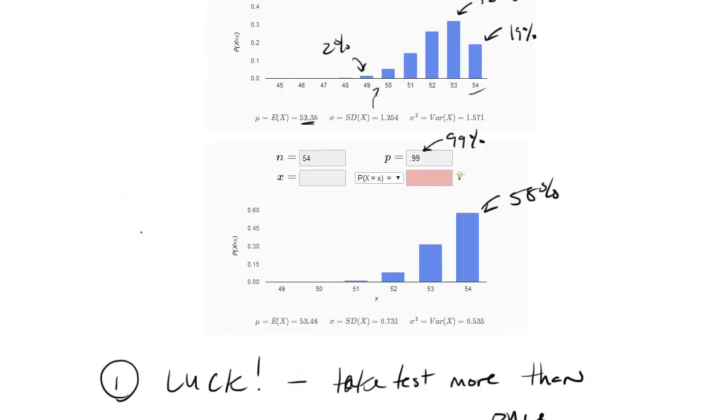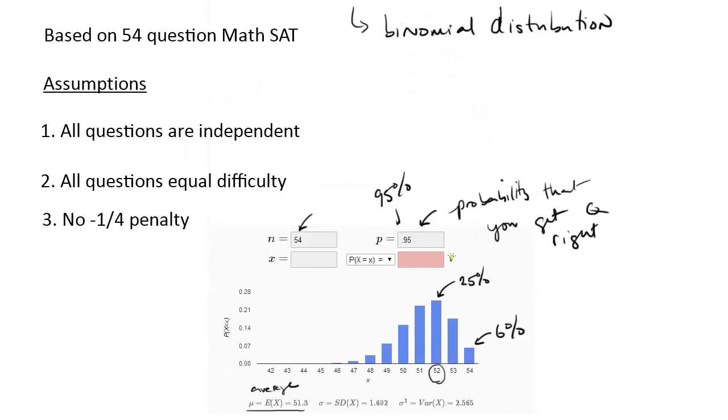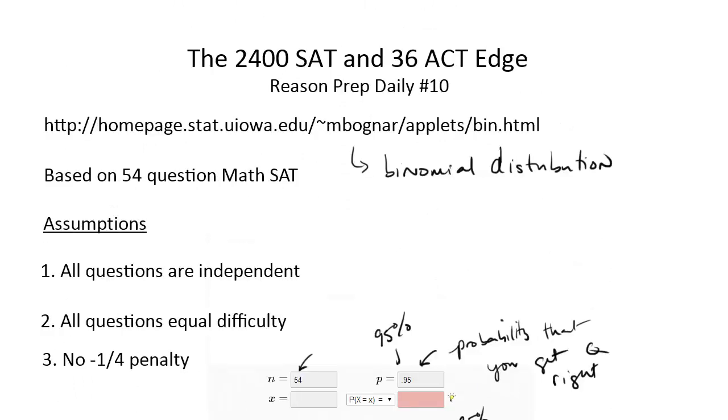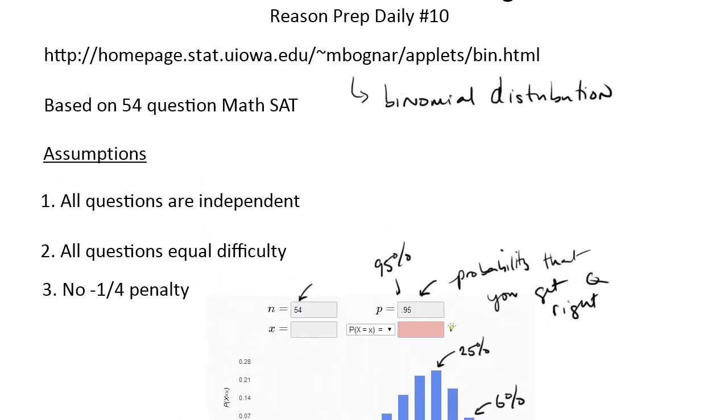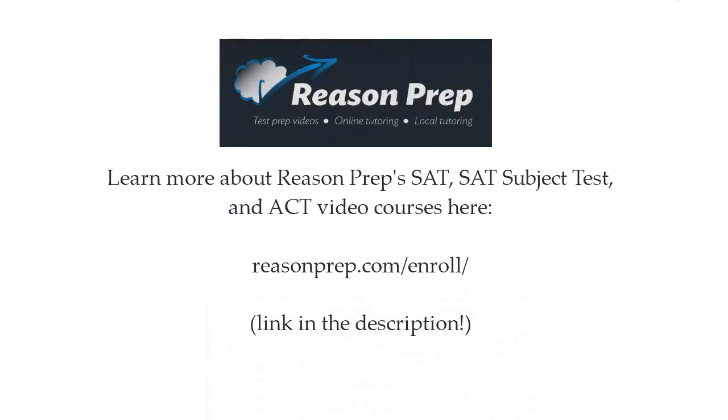So, that's the basic idea here. And again, you can play with this calculator yourself, see what happens if you change the percentages and it's pretty interesting to see. Really, it comes down to these small percentage differences and the more you can focus on the details, the better likely you are to get that 2,400 or that 3,600. To learn more about ReasonPrep's SAT, SAT Subject Test, and ACT Video Courses, go to reasonprep.com slash enroll and you can find the link in the description below the video.